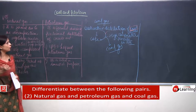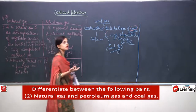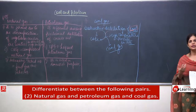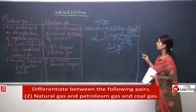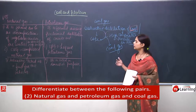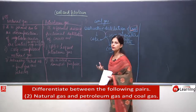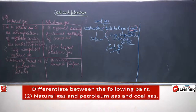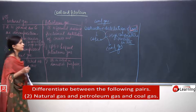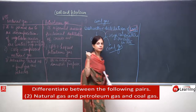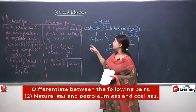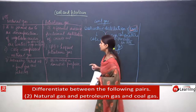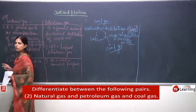Coal gas was first used as a fuel for burning lamps, and now it is also used for producing heat. It works as a good fuel and produces a good amount of heat. So these are the three gases we need to know: natural gas, petroleum gas, and coal gas.